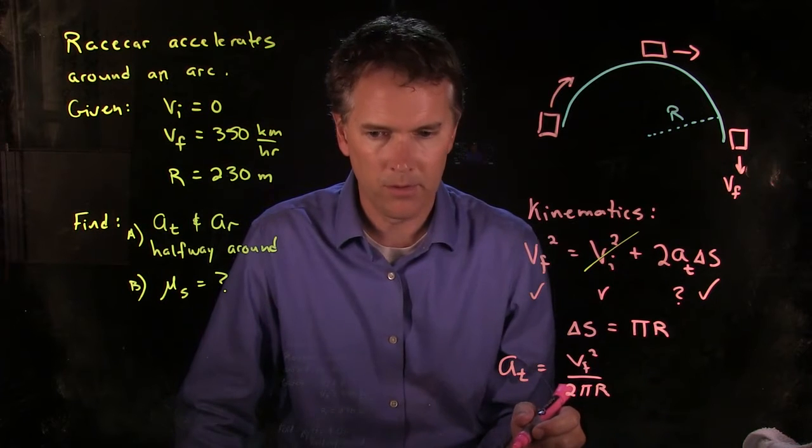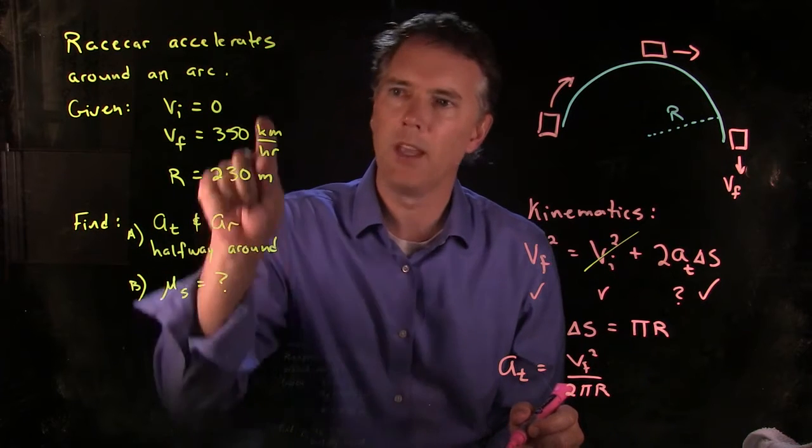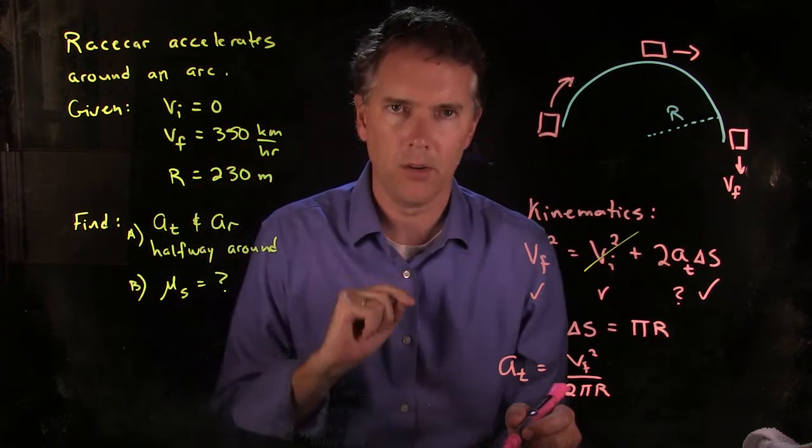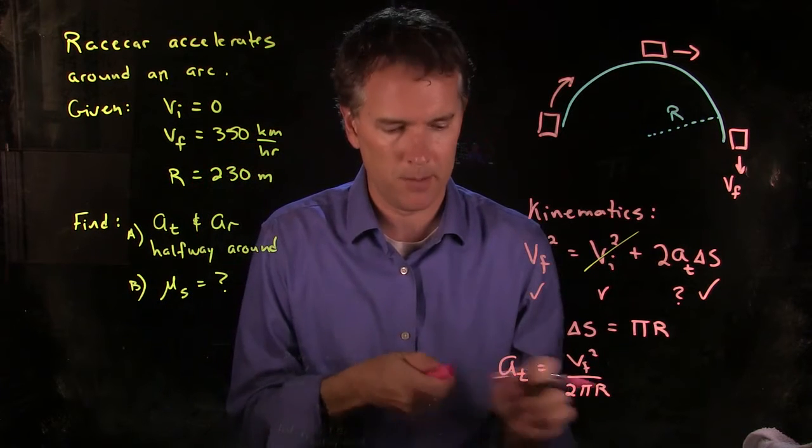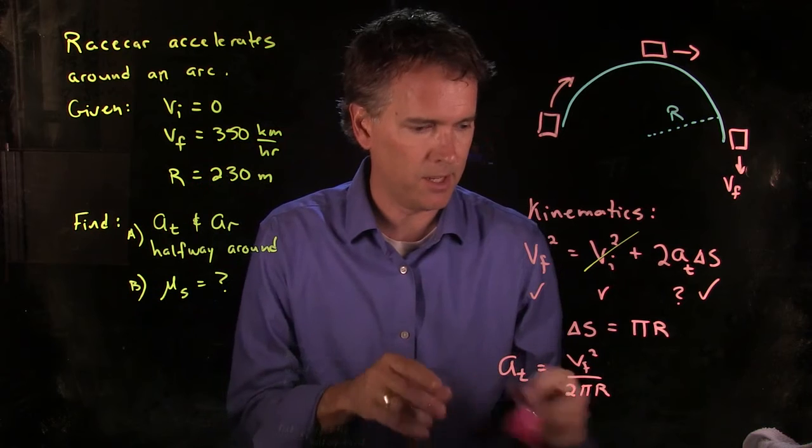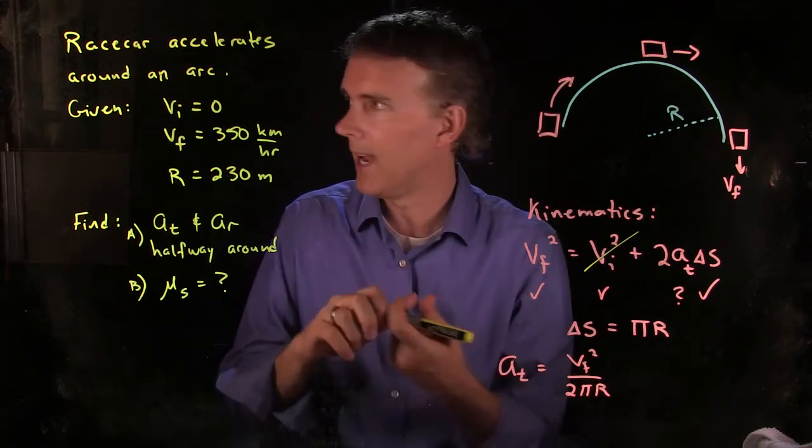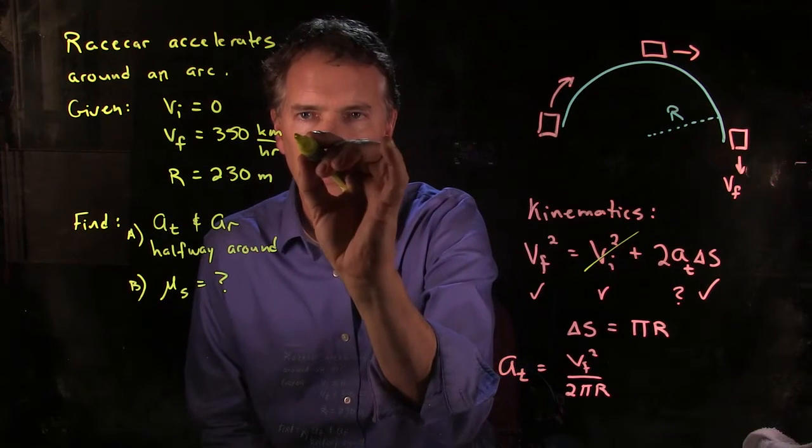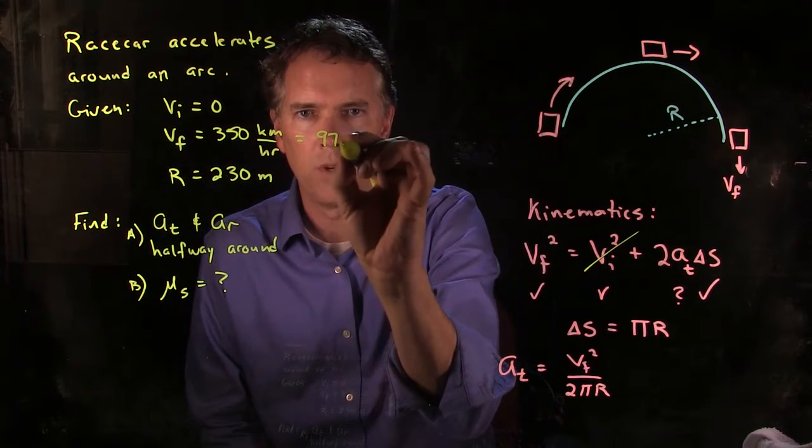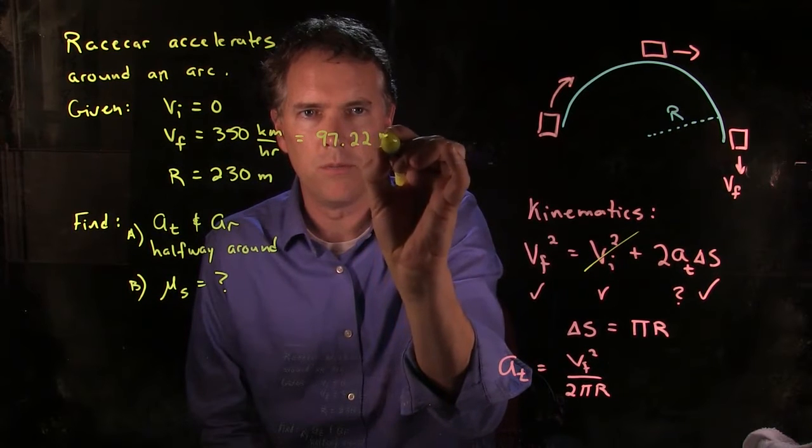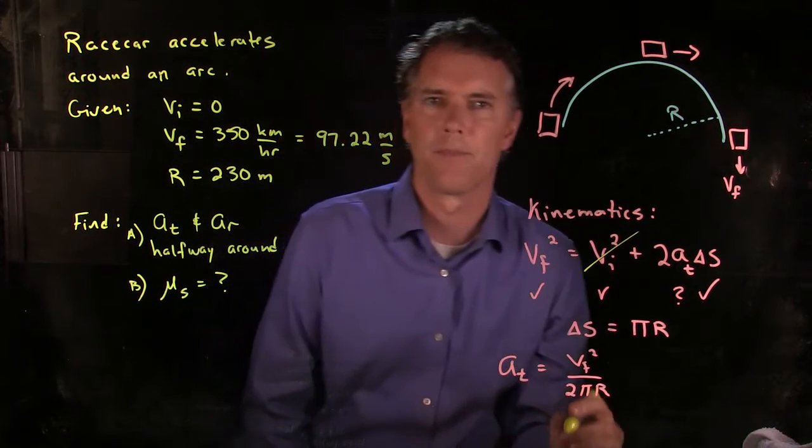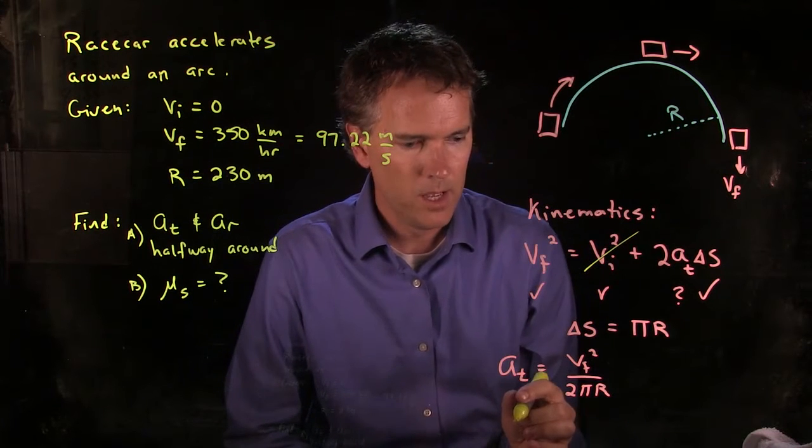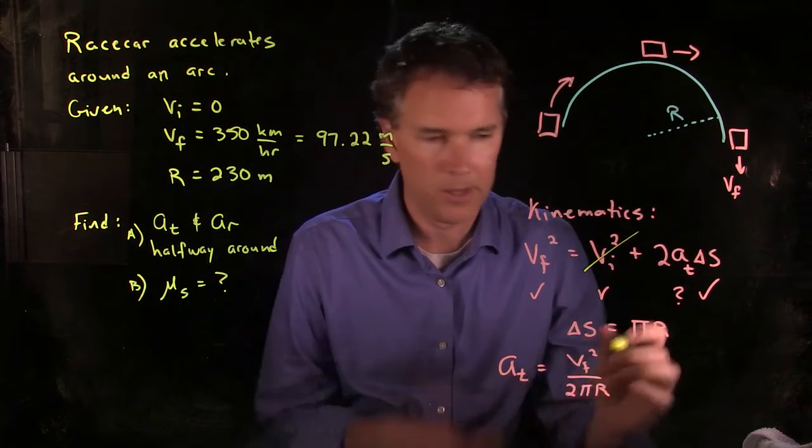What are we left with? We have VF squared, and then we have to divide by 2 Delta s, but we said Delta s was equal to πR. And now we have all those numbers. Now you have to do one more thing, you have to convert this to SI units since it's in 350 kilometers per hour. You got to convert that to SI units. So let's do that. I did it earlier. What did I get? I got 97.22 meters per second. Double check me on that, but I'm pretty sure that's right.